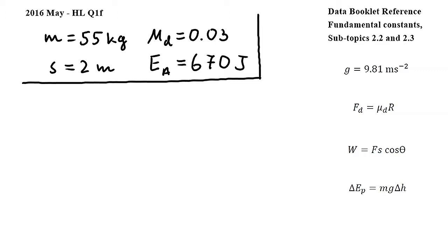To do so, we will combine these two equations from subtopics 2.2 and 2.3, where Fd is dynamic friction force, μd is the coefficient of dynamic friction, R is the normal reaction force, W is work done, F is force, s is distance traveled, and θ is the angle between the direction of the force and the distance traveled.